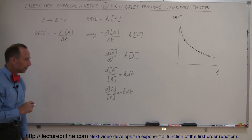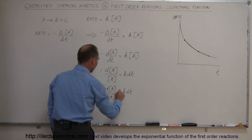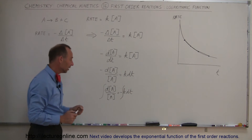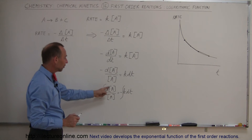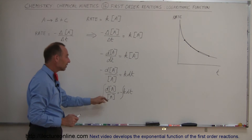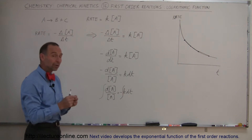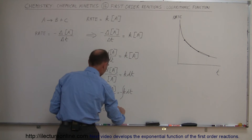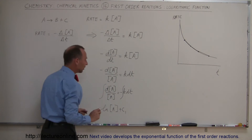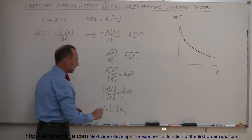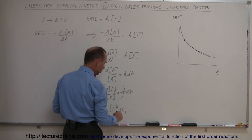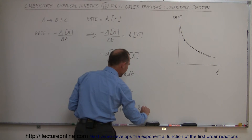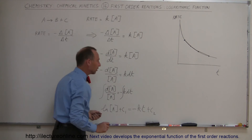Now we're ready to integrate both sides. Remember that K is a constant, so it goes outside the integral sign. On the left, the integral of d[A] over [A] equals the natural log of [A], plus a constant of integration C₁. On the right, the integral of dt is T, so we get negative K times T plus another constant of integration C₂.